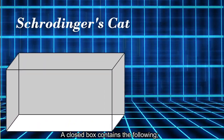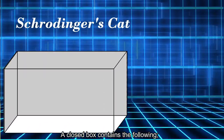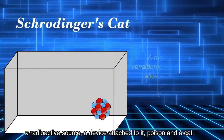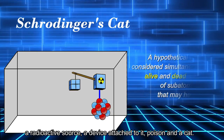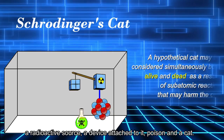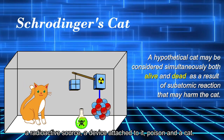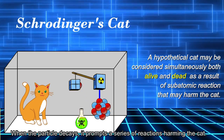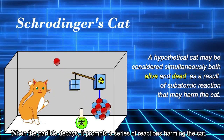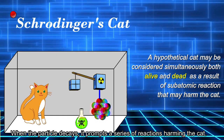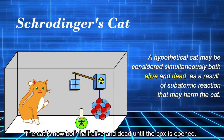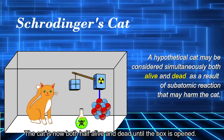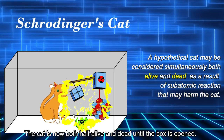A closed box contains the following: a radioactive source, a device attached to it, poison, and a cat. When the particle decays, it prompts a series of reactions harming the cat. The cat is now both half alive and dead until the box is open.